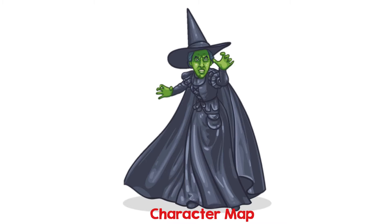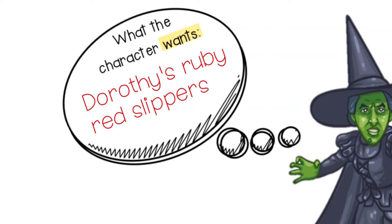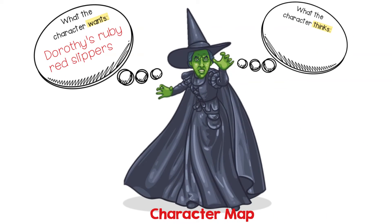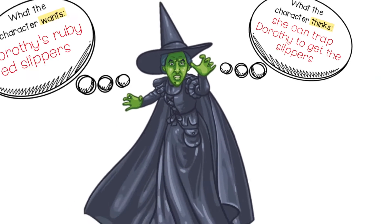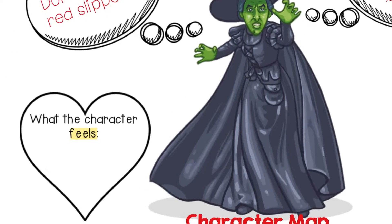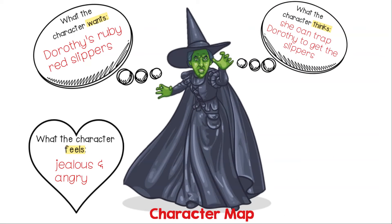After reading the Wizard of Oz script for my musical, I know that the Wicked Witch wants the ruby red slippers that Dorothy is wearing because they have magical powers in the land of Oz. She's willing to do anything to get them. She thinks that if she can trap Dorothy, she can steal the slippers off her feet. I think she feels jealous and angry that Dorothy has the ruby slippers.